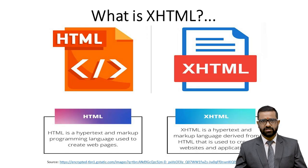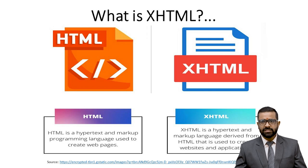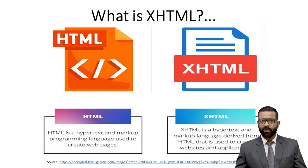Here we have HTML and XHTML so the difference is visible. HTML is a hypertext markup language used to create web pages, while XHTML is a hypertext markup language derived from HTML itself, used to create websites and applications. XHTML is more applicable to websites and applications.